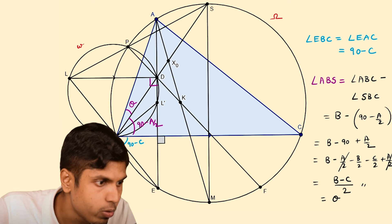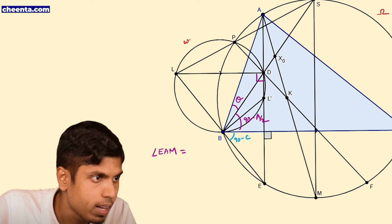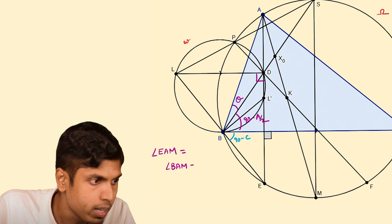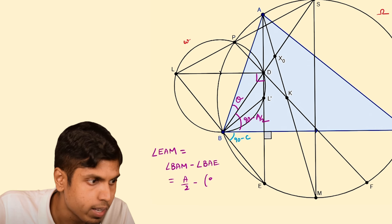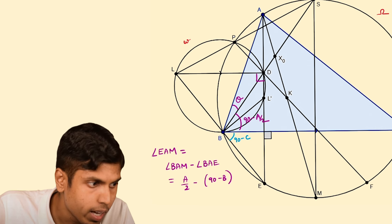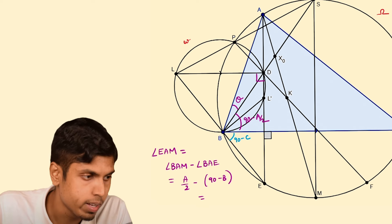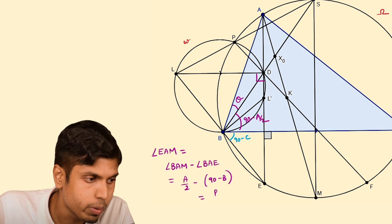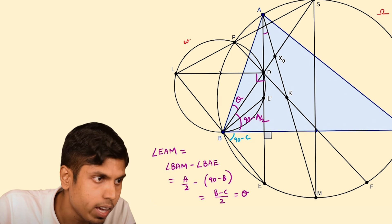Let's find angle EAM. Angle EAM equals angle BAM minus angle BAE, which is A/2 minus (90 minus B). Writing 90 as A/2 + B/2 + C/2, the A/2 terms cancel, giving (B minus C)/2, which is theta again. So angle EAM equals theta.